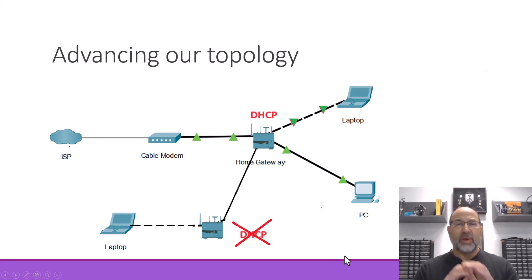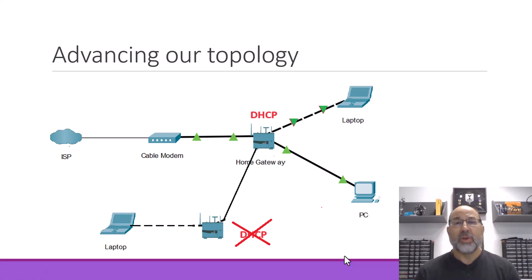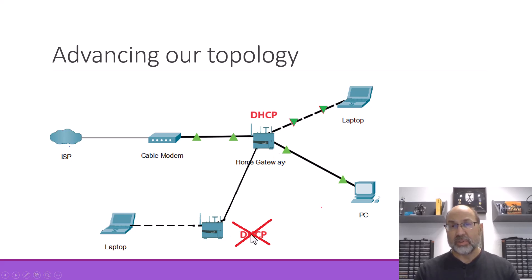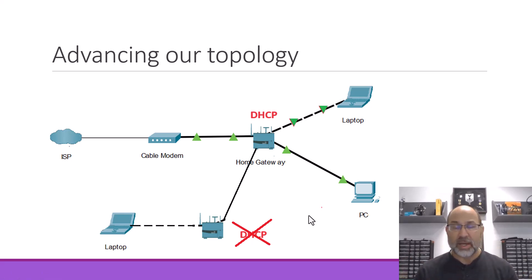That way, there's no confusion about where my IP address comes from, no confusion about what address space. Imagine what would happen if this one defaulted to 192.168.1.0 and this one defaulted to 192.168.2.0 — you would have two different networks operating on the same Layer 2 Ethernet network, which is never a good idea.